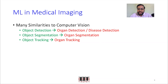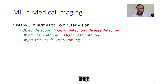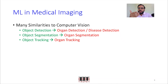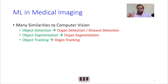Then there is segmentation — object segmentation. In medical imaging, your object is an organ. And there is object tracking: many of you are working on that in computer vision — vehicle monitoring, pedestrian tracking, crowd counting. Here also, you have organ tracking. For example, in a CT or MRI scan of the heart, there could be motion from one acquisition to the next, so you would like to track that, or during image-guided surgery.